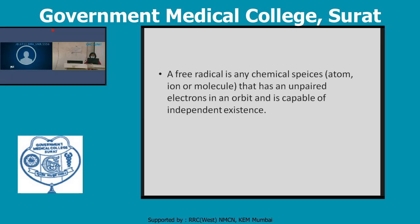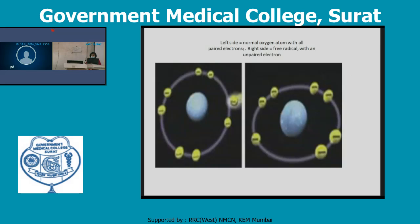In free radicals, there is an unpaired electron. This figure shows the unpaired electron — the left side shows the paired electron and the right one shows the unpaired electron. That is a free radical.